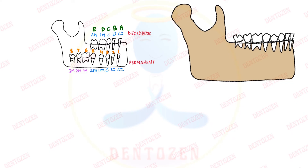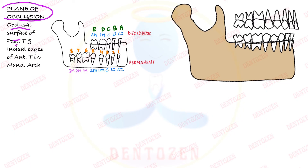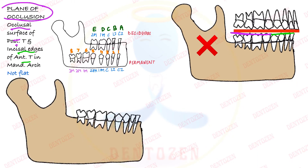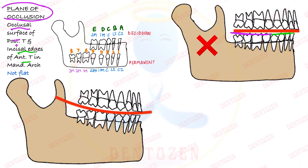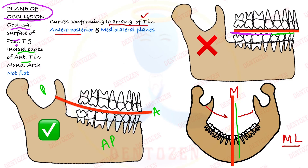Permanent teeth are replacing deciduous teeth. Permanent mandibular teeth contact permanent maxillary teeth at a plane known as the plane of occlusion. This passes through the occlusal surfaces of posterior teeth — premolar to molar — and the incisal edges of anterior teeth — incisors and canines. The plane is not flat; it is in the form of a curve running from anterior to posterior direction, the anterior-posterior curve. These teeth also show a mediolateral curvature. These curves, conforming to tooth arrangement in anterior-posterior and mediolateral planes, are known as curves of occlusion or compensatory curves.